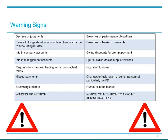These indicators include decrees or judgements being granted against the counterparty, failure to lodge statutory accounts on time or change to accounting reference dates, information contained in the statutory accounts for example a going concern qualification — although by definition the information contained in these accounts will be historic. Information in management accounts if these can be obtained either by relying on a contractual entitlement or through exerting commercial leverage. Requests for change in trading terms or contractual terms can be indicative, missed payments, stretching creditors, breaches of performance obligations — for example if a supplier puts a counterparty on stop that can impact their ability to perform under your contract.